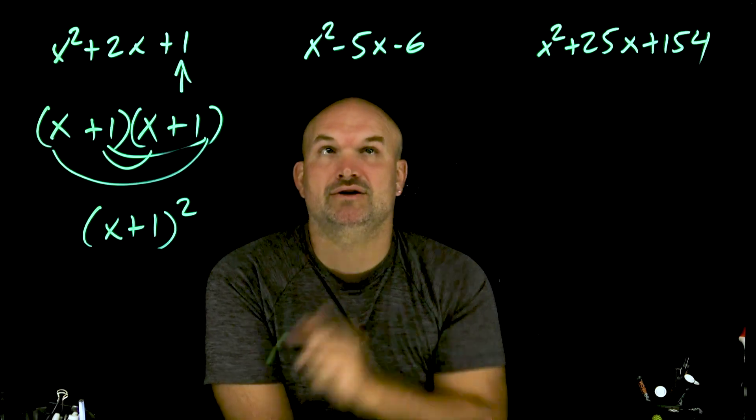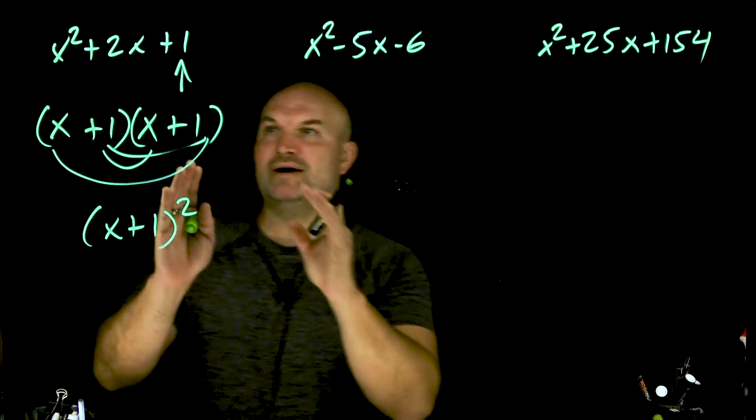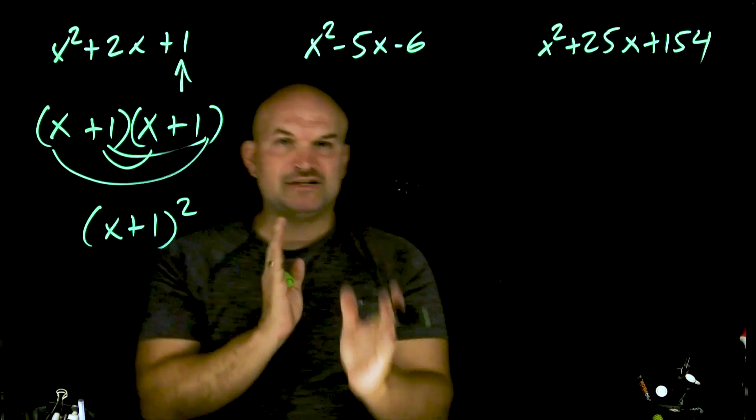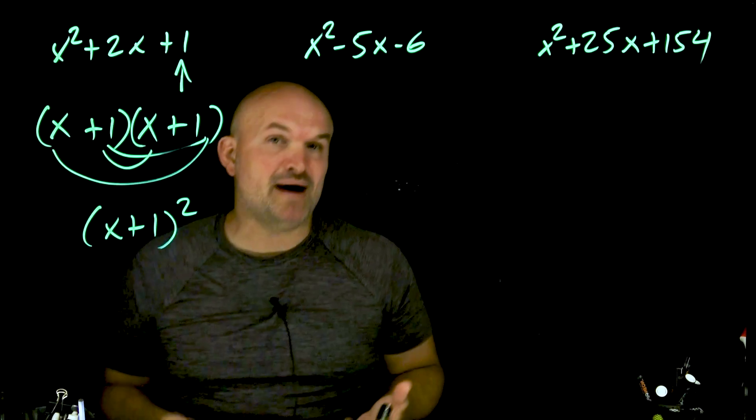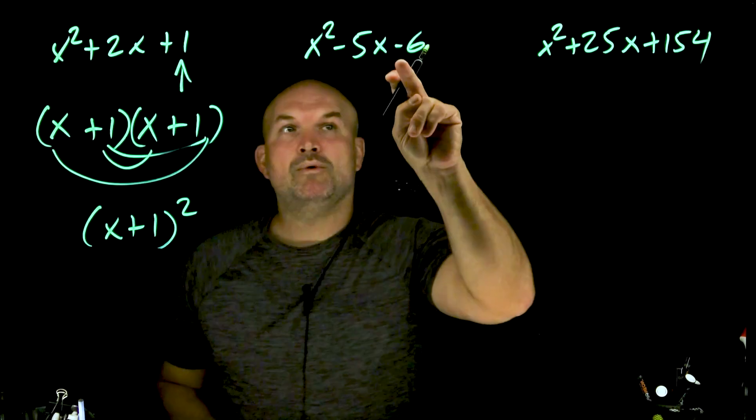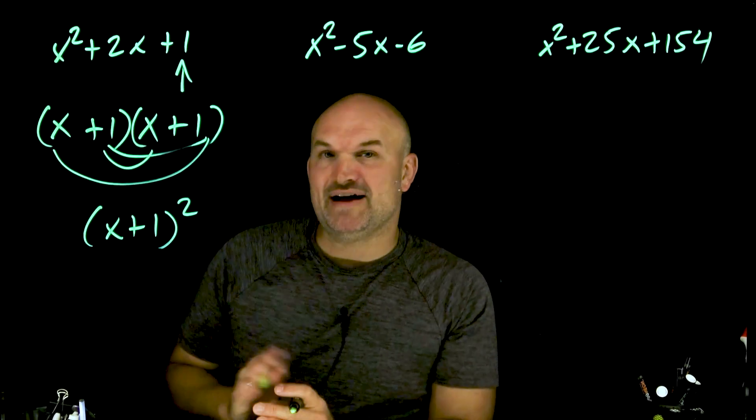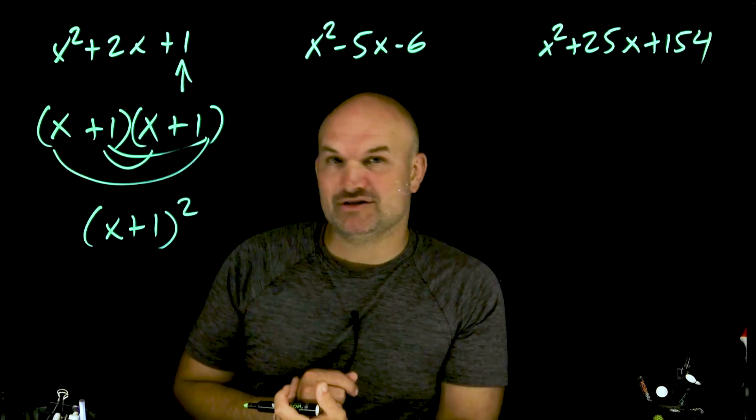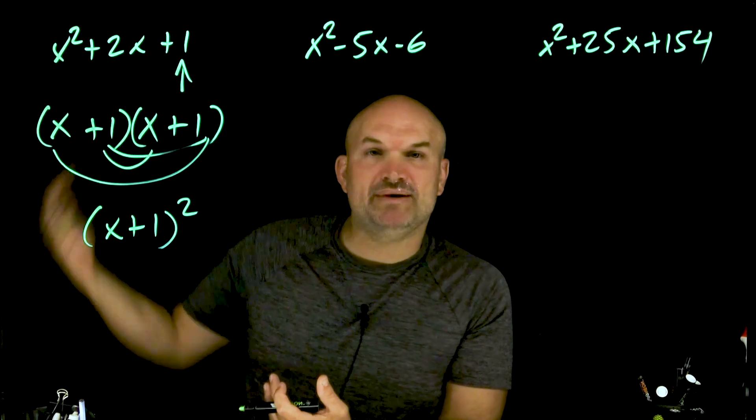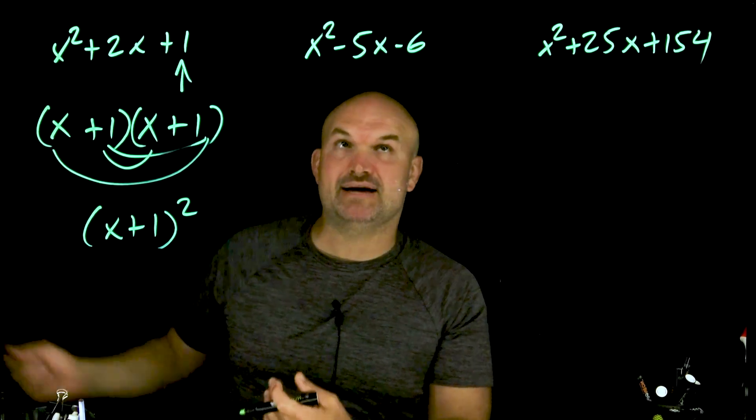The other important thing we need to look at is our last term is going to be negative. When it's positive, we know the factors have the same sign. Either they're both positive or both negative. When we have a last term as negative, one of our factors will be positive and one will be negative.